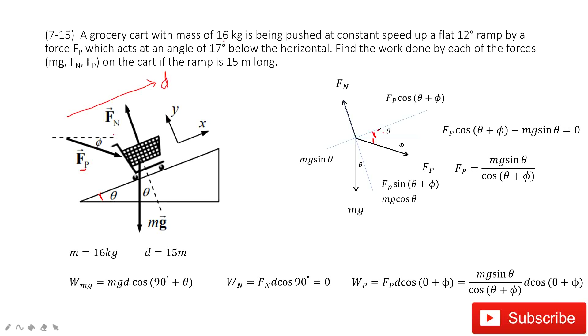Therefore, this angle is θ plus φ. So in this way, we can project Fp in two components: Fp sine(θ + φ) and Fp cosine(θ + φ). In this way, we can solve the problem.